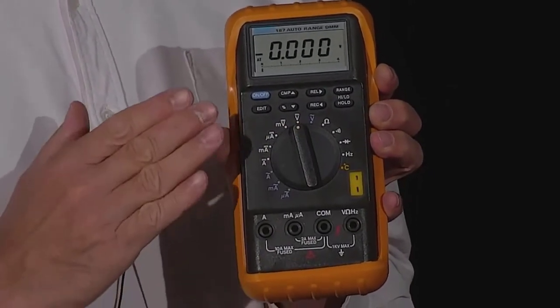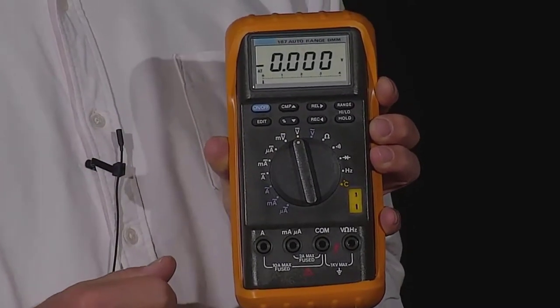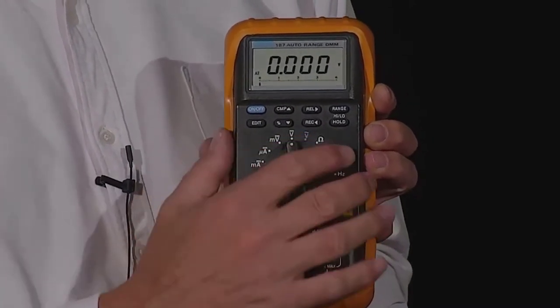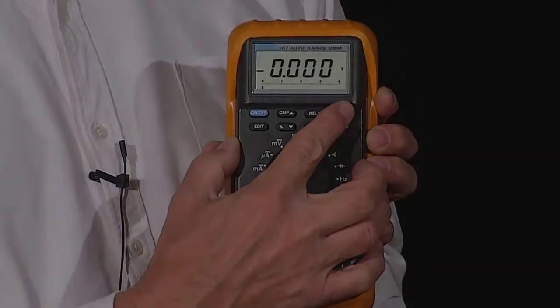With many digital instruments, the measuring range is initially selected automatically. However, it can almost always be changed manually.